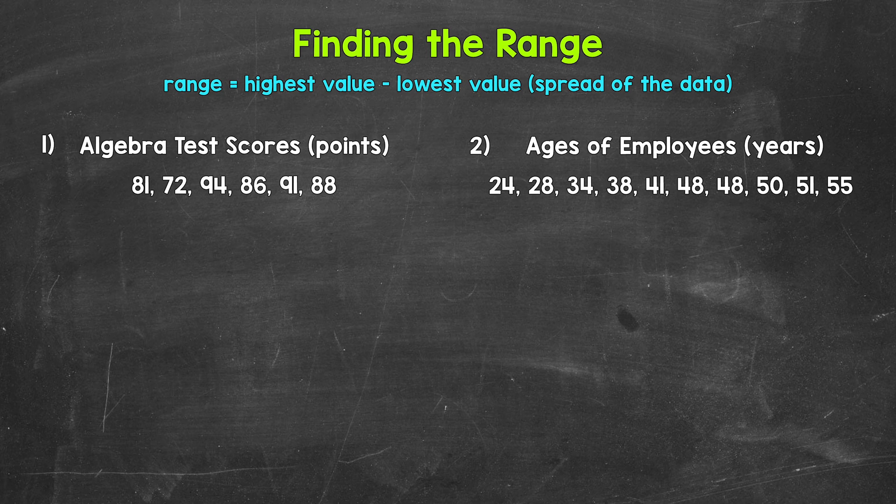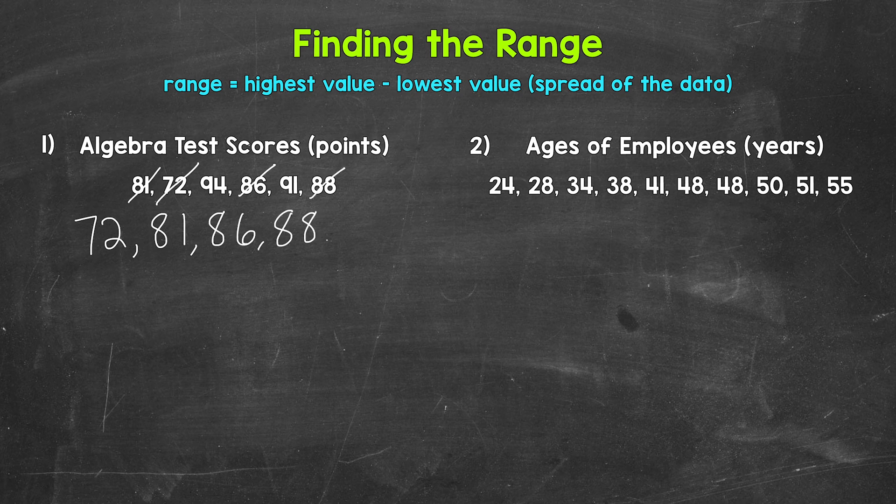The lowest score is 72, so that comes first. Then we have 81, then 86, then 88, then 91, and then lastly, 94. Now that this data is in order from least to greatest, we need to find the range.